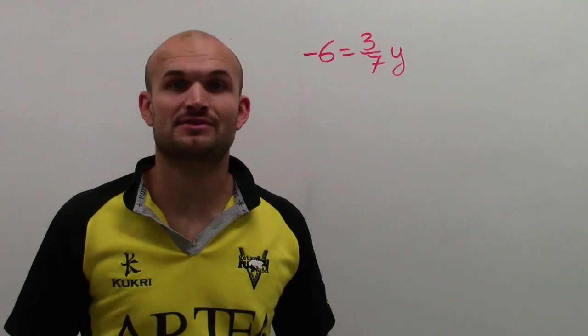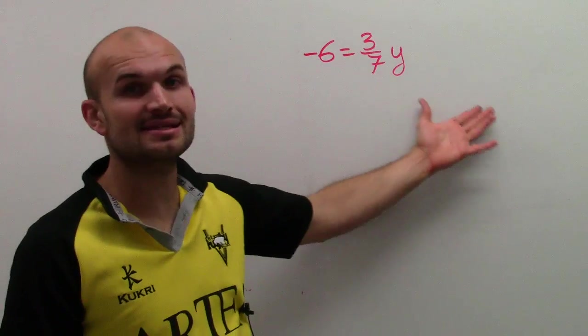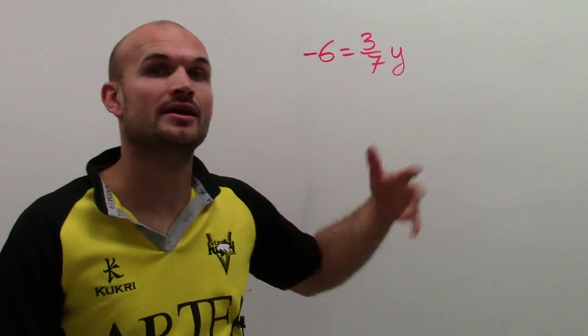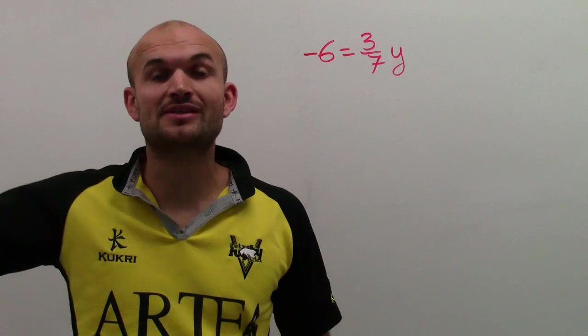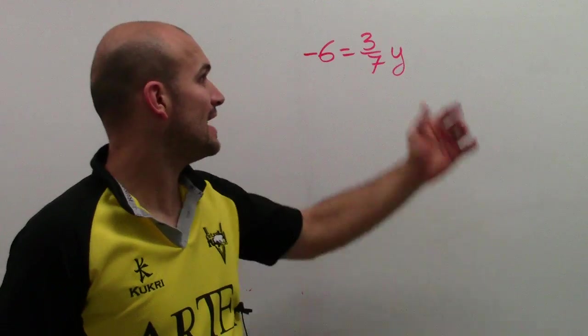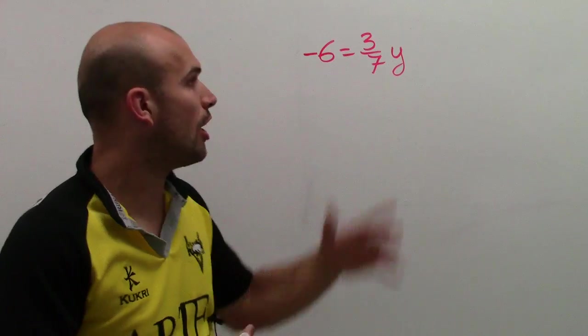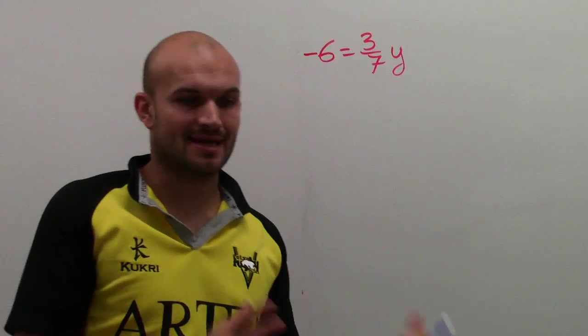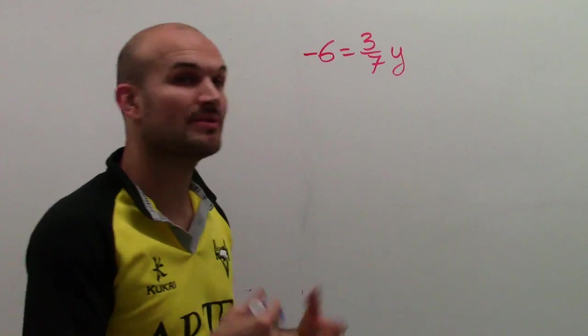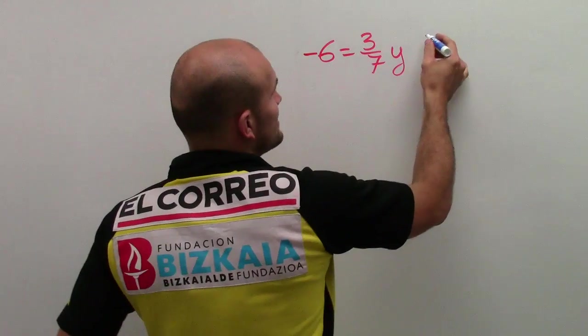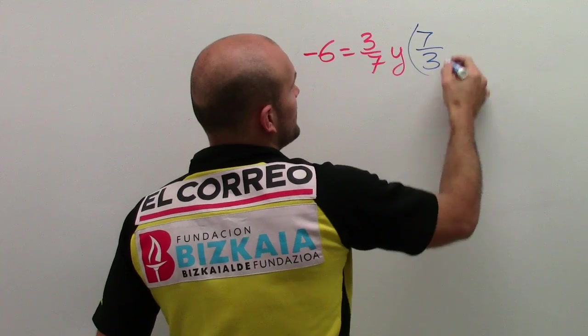Here I can use inverse operations, but it's easier to notice that whenever I have a fraction, remember if I multiply a fraction by its reciprocal, that gets me to 1. And 1 times my variable y is going to get me to y, which will isolate it. So all I need to do, I can use the inverse operations, but I don't have to. Here I can just simply multiply by the reciprocal.